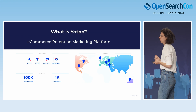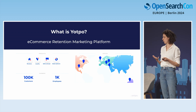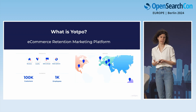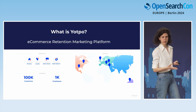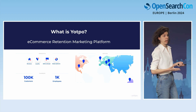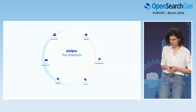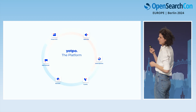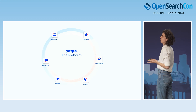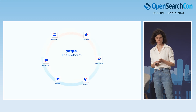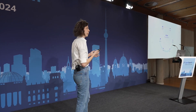Yotpo is an e-commerce retention marketing platform aiming to help e-commerce brands to grow. It has multiple products such as reviews, loyalty programs, SMS and emails for marketing, and subscriptions. It has 100K customers and 1,000 employees located in eight different places around the world. As a multi-product company, Yotpo can provide cross-platform multi-product experience using synergies between the different products.